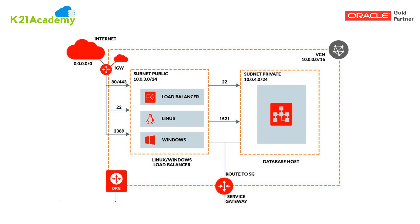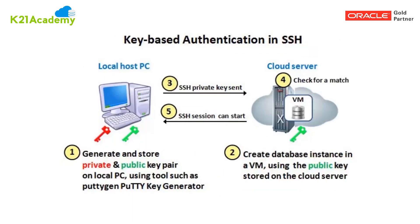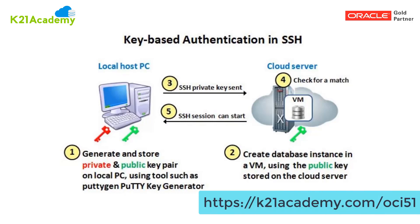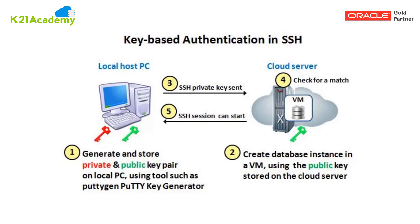Once you have a VCN and public subnet, you need one more thing: an SSH key pair, which you can generate using PuTTYgen. You will access this autonomous Linux using the SSH private key. If you don't have an SSH key pair or don't know how to create one, follow our step-by-step guide at k2nacademy.com/OCI51.